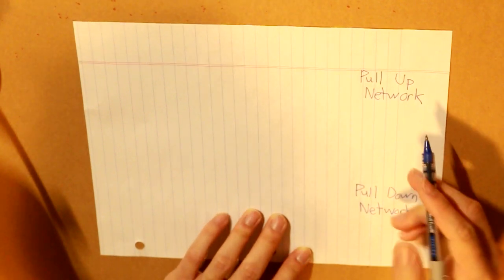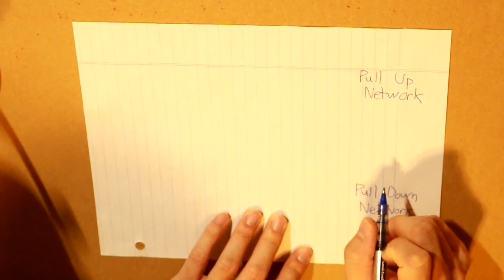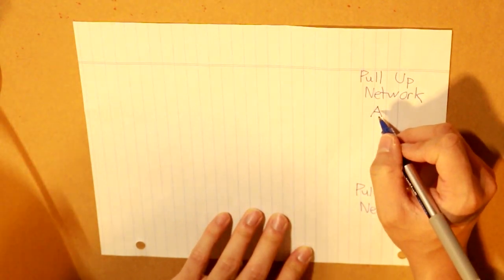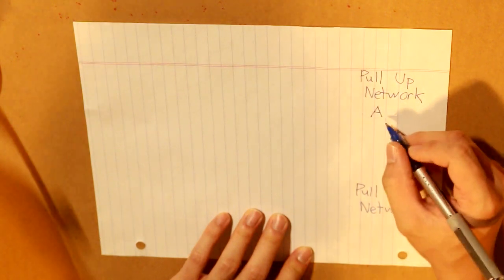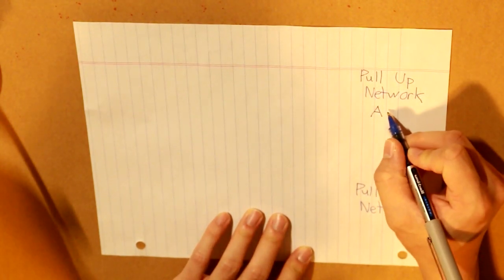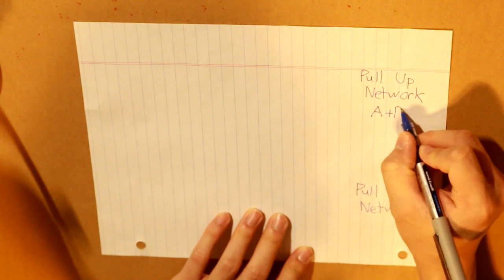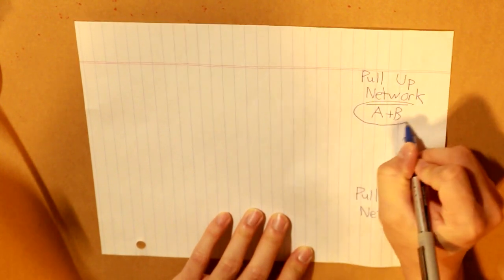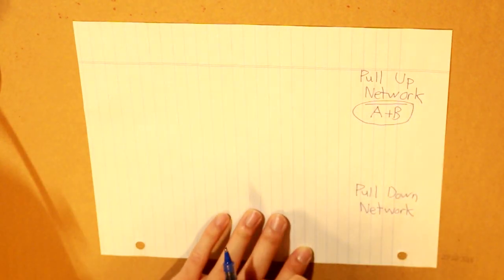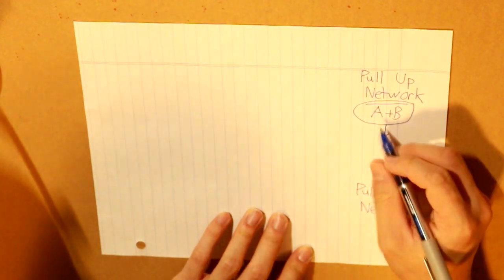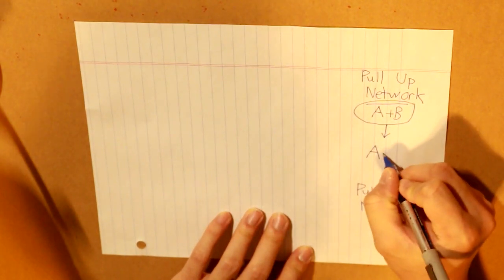So for our NOR gate, our pull-up network will look like this. This is what an equation of a NOR gate is. So pull-up network, NOR gate, this is what a NOR gate is. And if we convert that to our pull-up network, it will look like this.